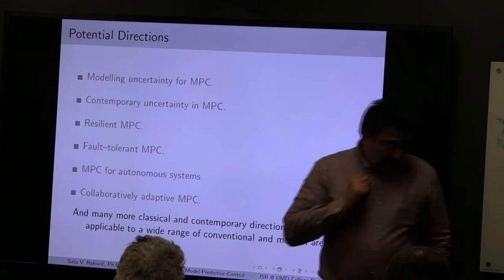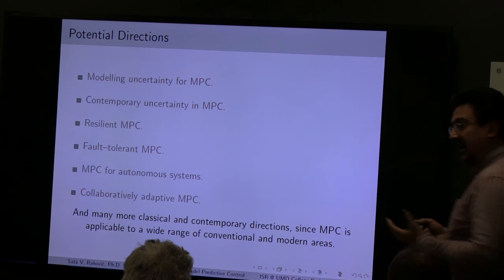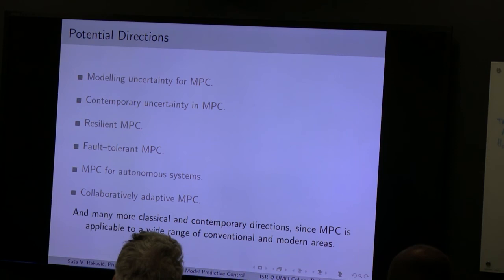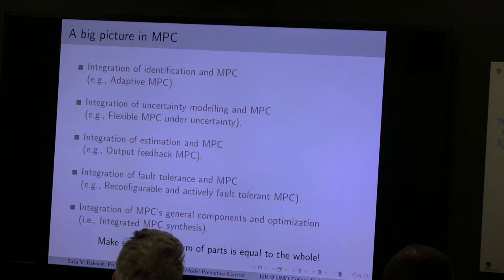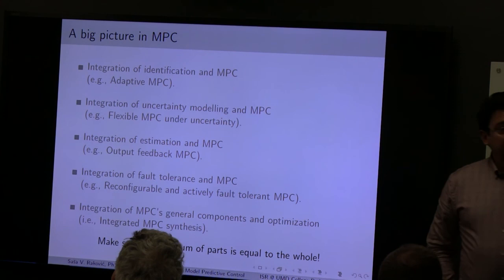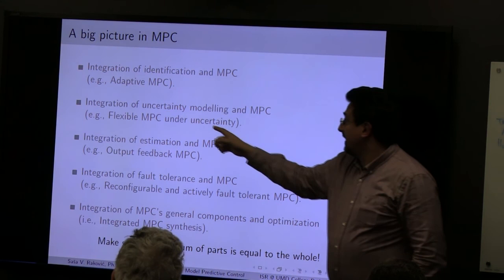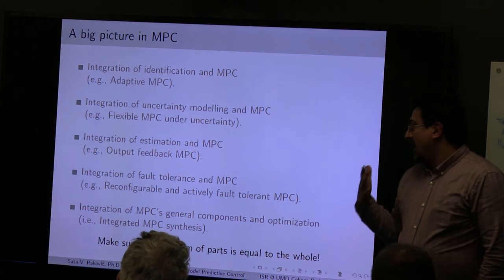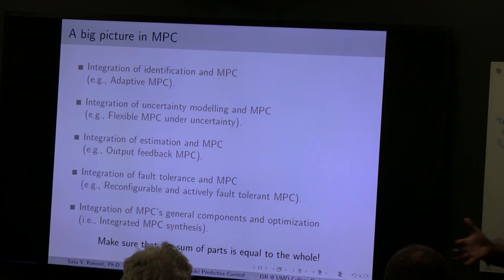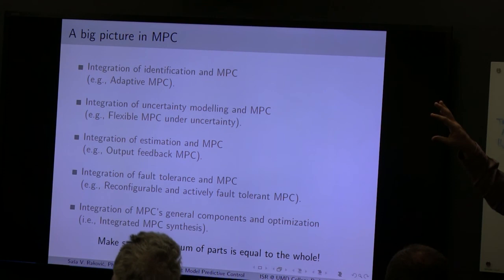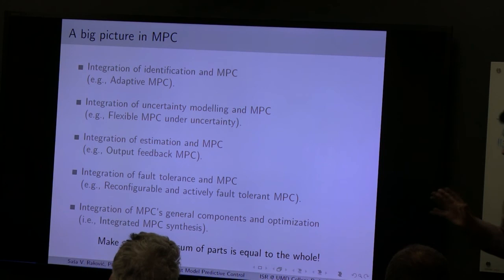MPC for autonomous systems — and also collaboratively adaptive MPC, because of human-machine interactions: humans will learn from machines, machines from humans, and if you couple this to MPC, you want collaboratively adaptive MPC. The big picture that will really change MPC is integration. Integrate identification in MPC, uncertainty modeling in MPC, estimation in MPC, fault tolerance in MPC. More generally, integrate MPC's general components and optimization. Make sure the sum of the parts equals the whole — don't optimize things separately, hoping that separate optimization will deliver global optimality. Separation may not hold. Take the more holistic view.